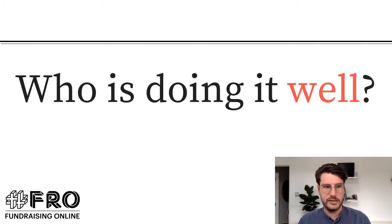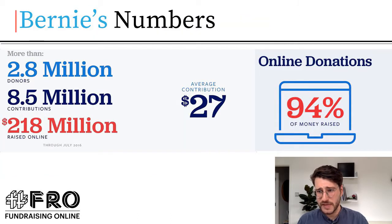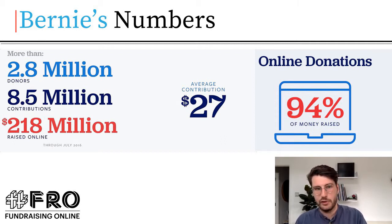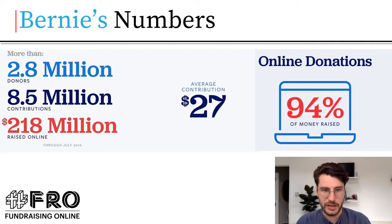So who is doing this well? Who's using movement building well to fundraise online? Probably the number one go-to example is Bernie Sanders' presidential election campaign in 2016. Here are the numbers: they grew an email list of over 10 million people, and from those supporters they raised $218 million online from 2.8 million donors and 8.5 million individual contributions, with an average contribution of $27. This is probably the single most effective example of fundraising with a digital movement — 94% of these donations came online.